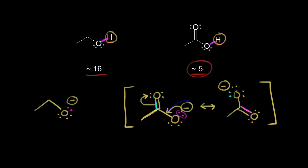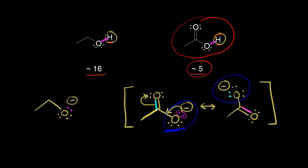So the negative charge on this oxygen is not localized to this one oxygen — it's spread out, it's delocalized. There's actually some negative charge on this oxygen too. Remember, resonance structures are not perfect. In reality, it's really a hybrid of our two resonance structures. So the negative charge is spread out, or delocalized, over two oxygens. And when you spread out a negative charge, that has a stabilizing effect for the anion. So our conjugate base is stabilized by resonance, and since our conjugate base is stabilized by resonance, that means acetic acid is more likely to donate this proton. And that's why we see a lower pKa value.